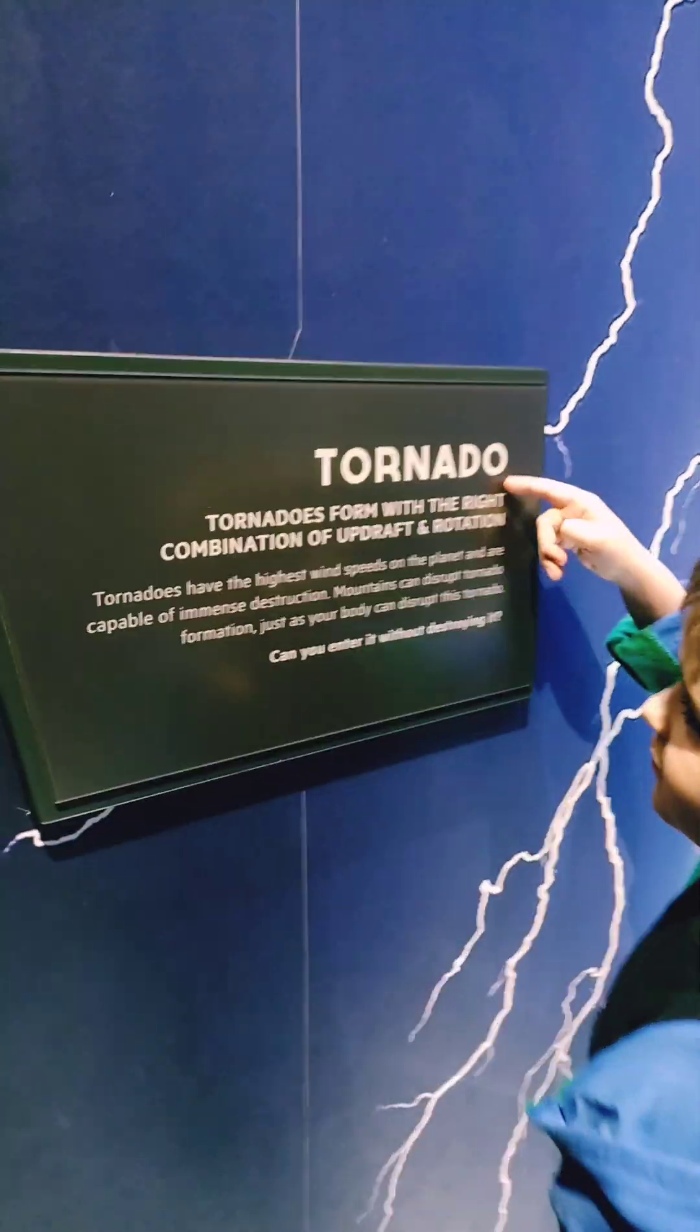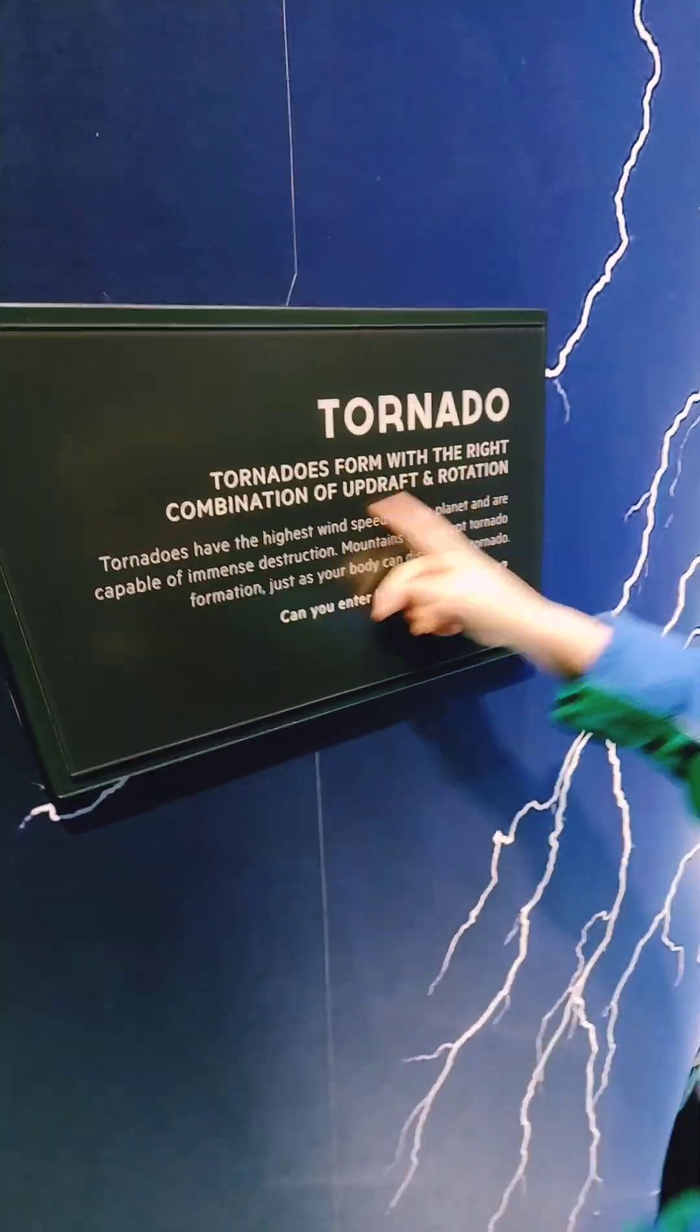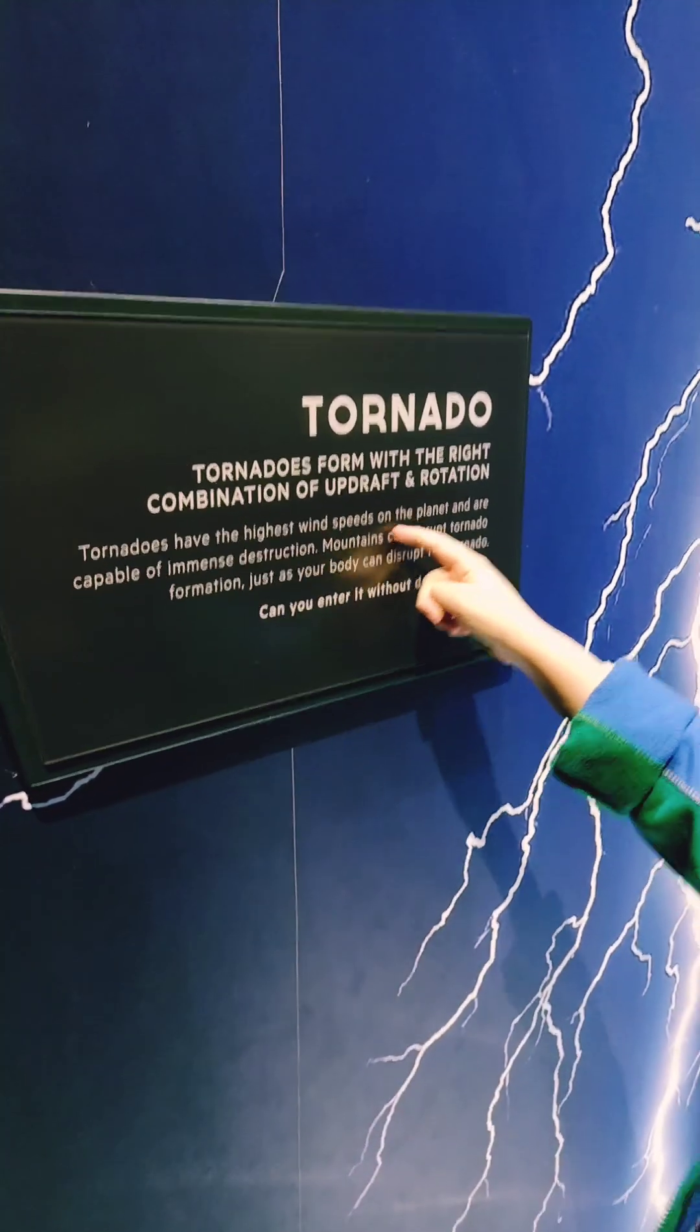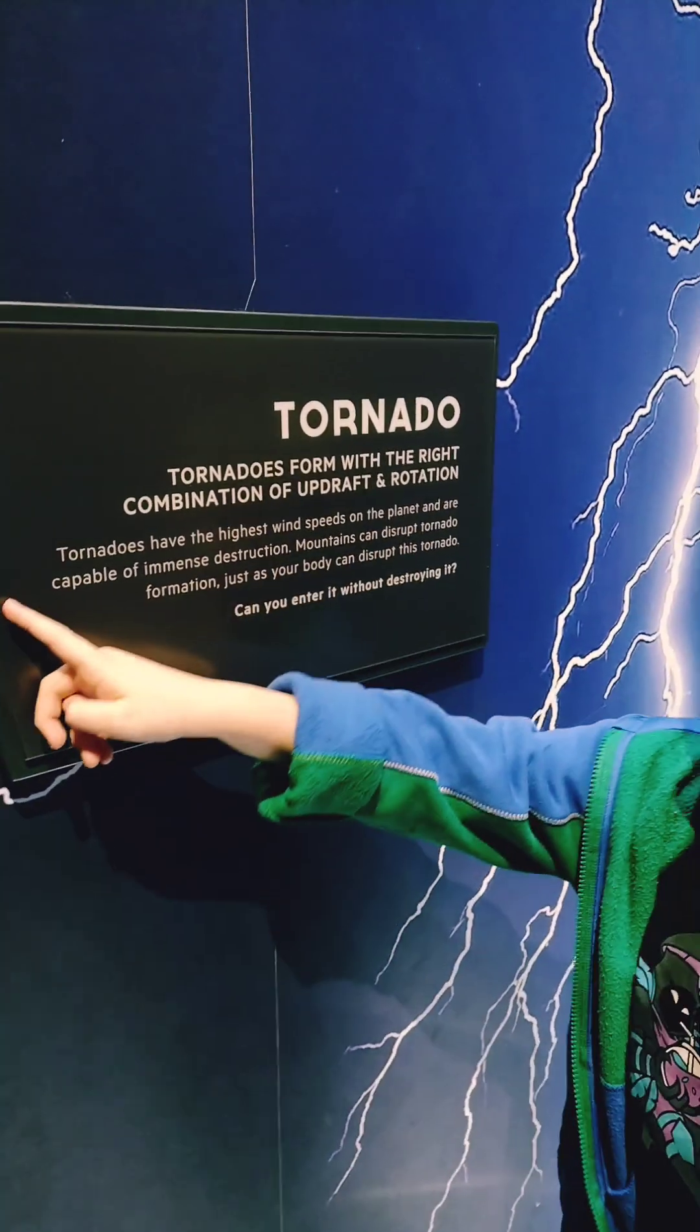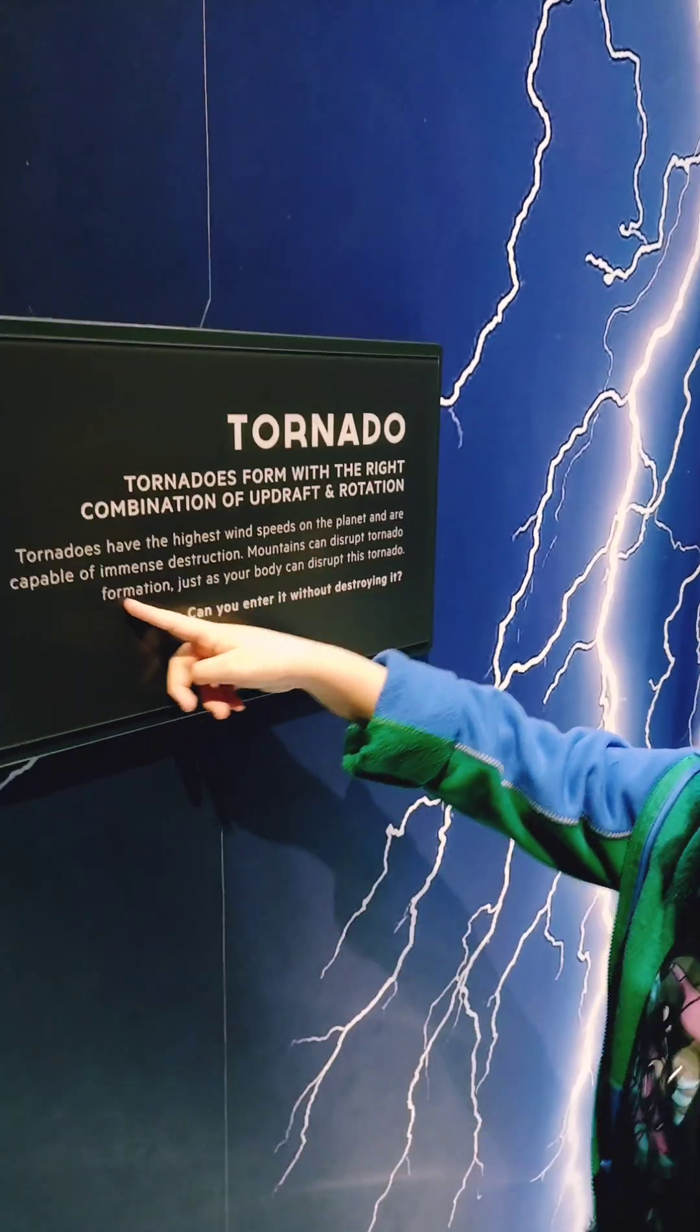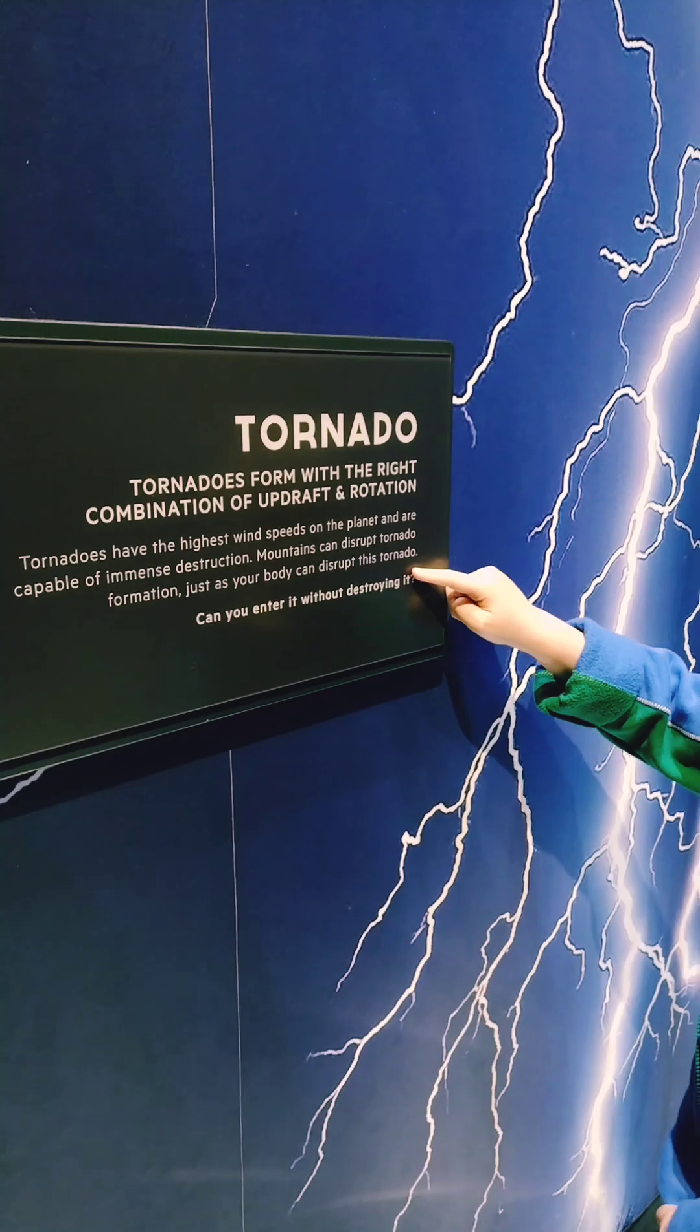Did you know tornadoes form from the right combination of instability and rotation? Tornadoes have the highest wind speeds on the planet and are capable of immense destruction. Mountains can disrupt tornado formation, just as your body can disrupt this tornado. Can you enter without destroying it?